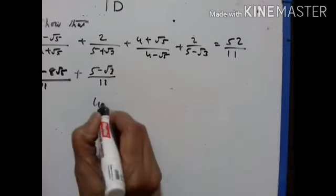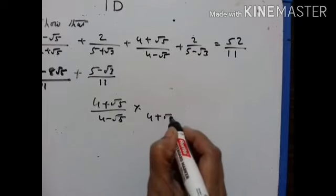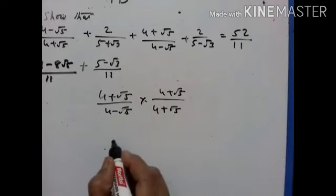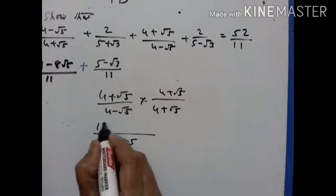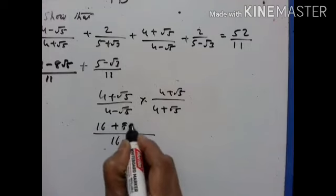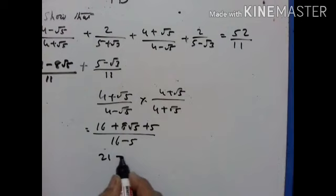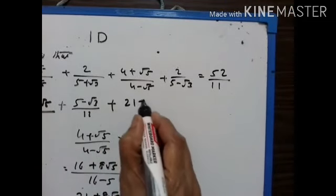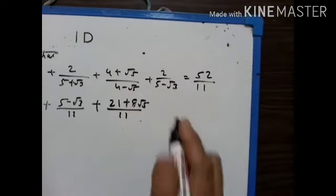Now take (4 plus √5) upon (4 minus √5). Rationalize by multiplying by (4 plus √5). The denominator gives a²−b² = 16 minus 5 = 11. The numerator (4 plus √5)² = 16 plus 8√5 plus 5 = 21 plus 8√5. So this term equals (21 plus 8√5) upon 11.